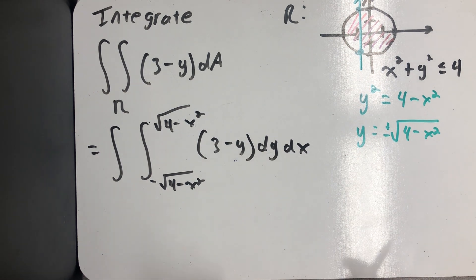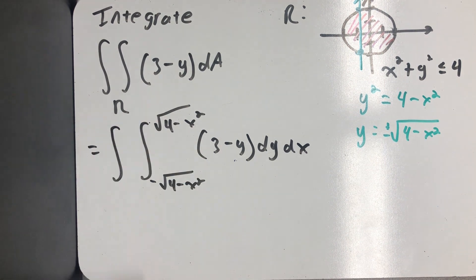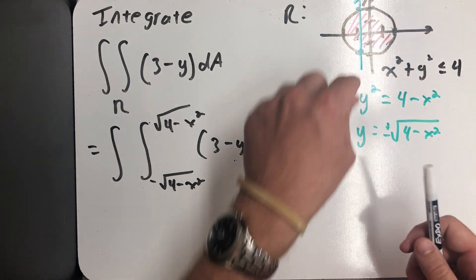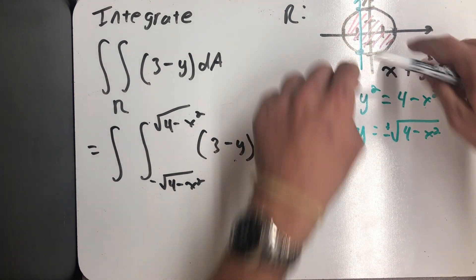And now I need to have my second variable's limits. I need y values that would include every possible ray. Well, that would be from minus 2 to positive 2.